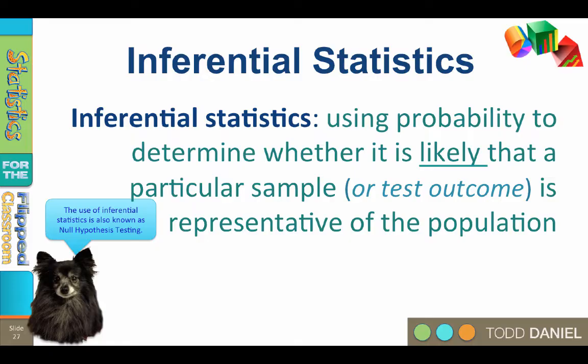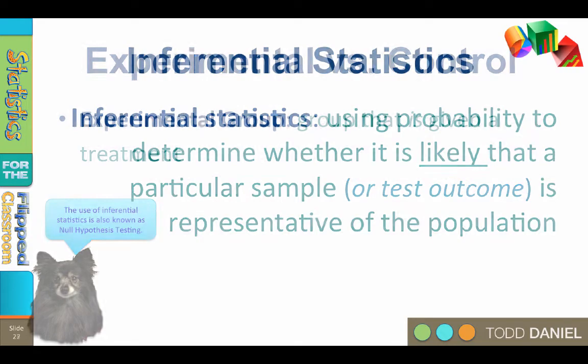If the sample mean is not exactly the same as the population mean, that may be for one of two reasons. One, the sample mean may differ from the population mean because of chance, or two, the sample mean may differ from the population mean because of an effect — probably an effect from the experiment we've just done on the sample.